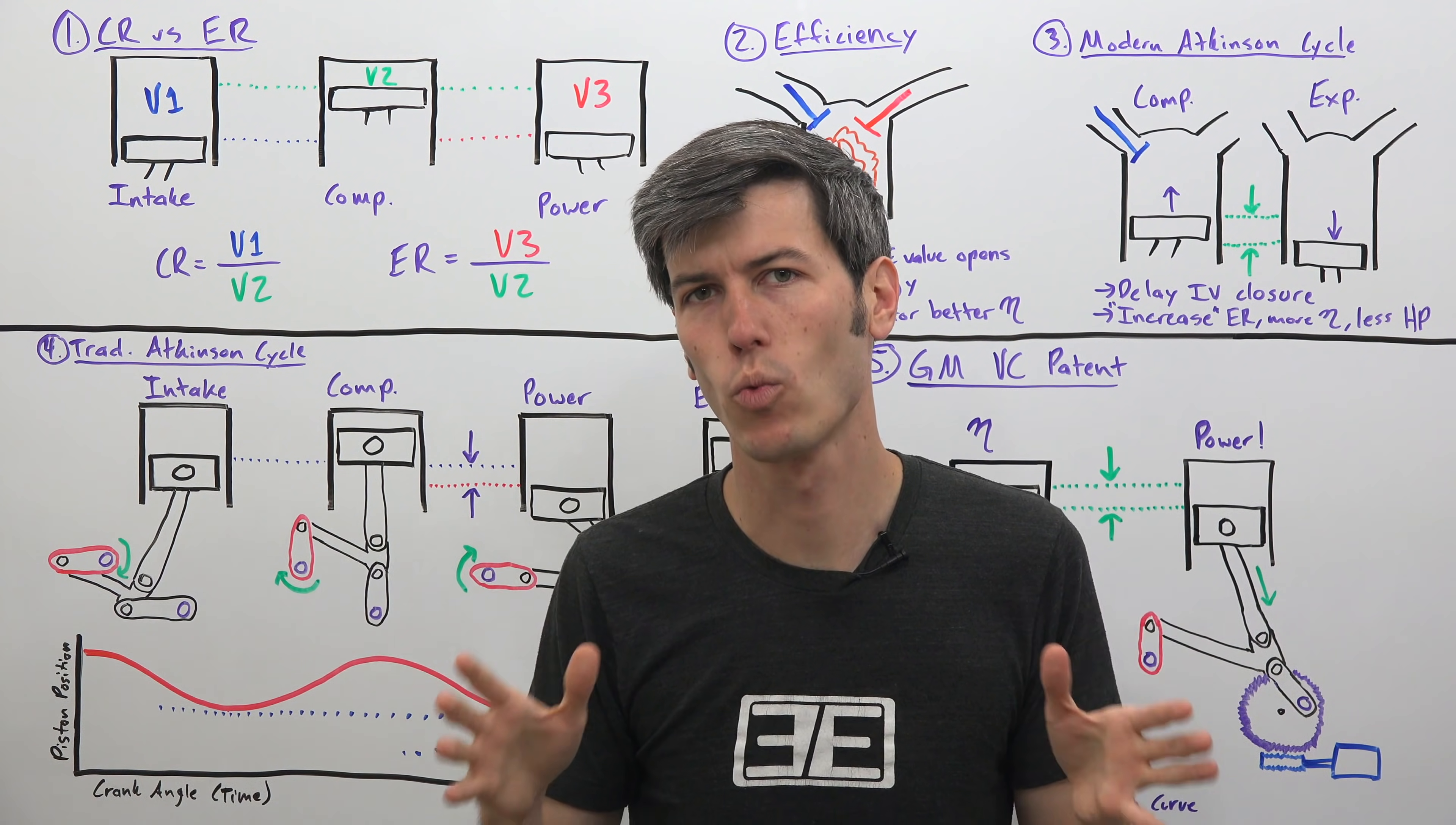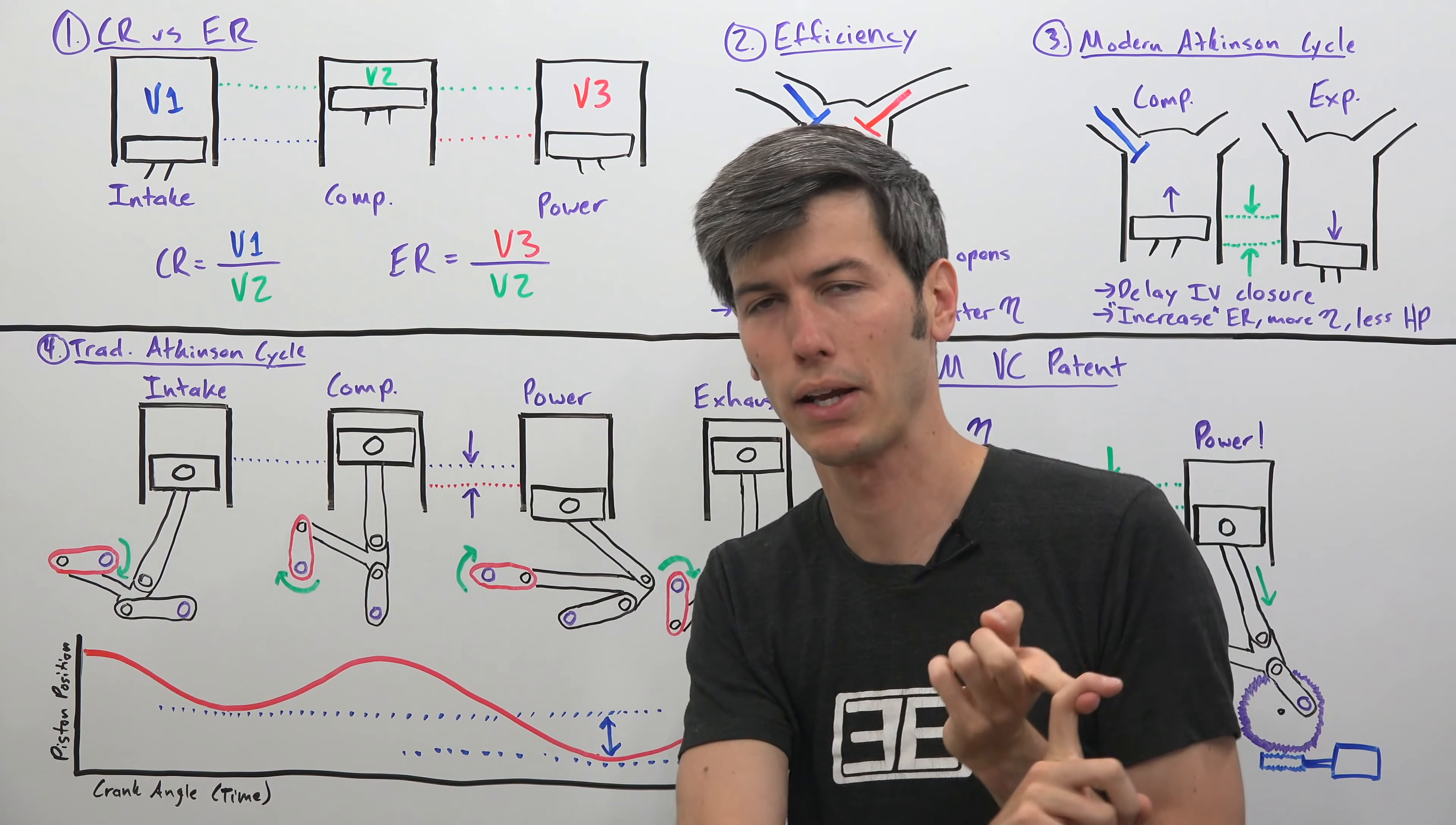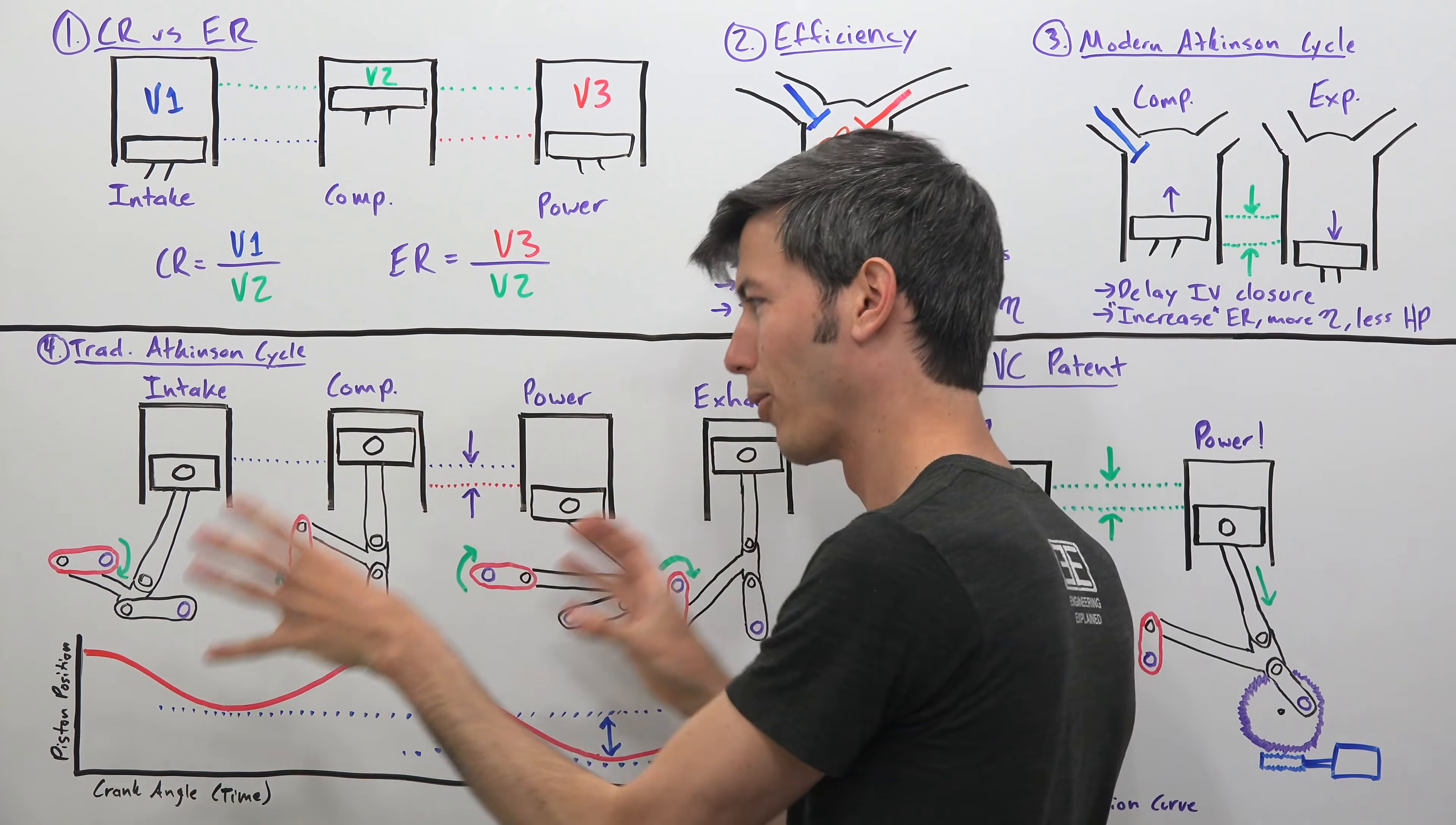So remember, GM's engine wants two things. They want independent expansion and compression ratios for efficiency, and then they want a variable compression ratio for power. And so how do they do this? Well, in order to understand the independent expansion ratio and compression ratio portion of it, we need to understand a traditional Atkinson cycle engine. And this probably looks fairly complicated. It's not. It's actually pretty simple how this engine works and we're going to get through it.